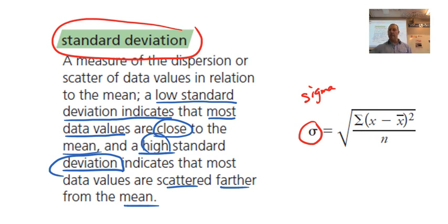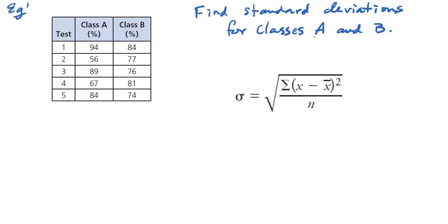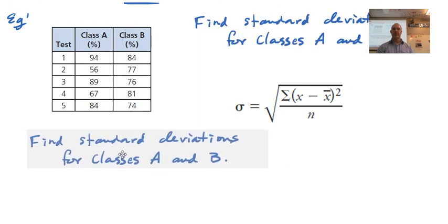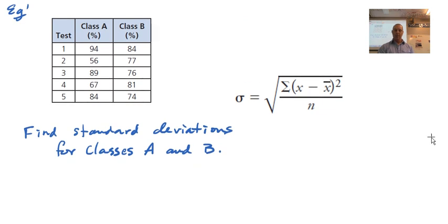What we're going to do is we want to find the standard deviations for each of these classes. So find the standard deviations for each of these classes, class A and class B. First thing we're going to need to do is we're going to need to find the average, right? You see the x-bar here, that's the average. We need to know that for each class. So let's do one class at a time. Let's maybe do class A down here first.